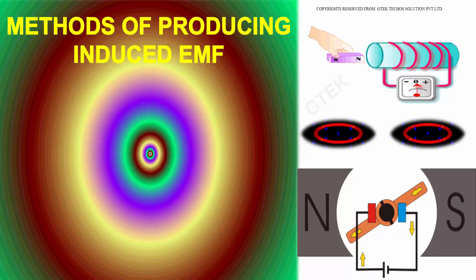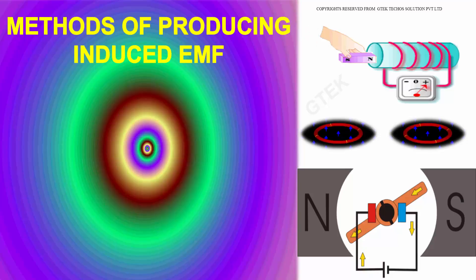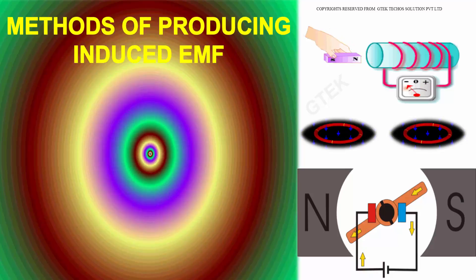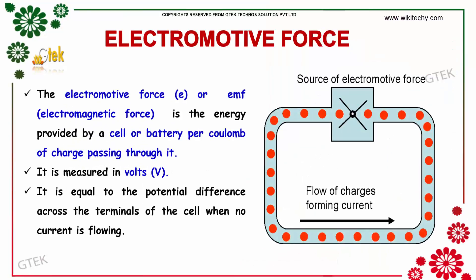Now let's talk about the methods of producing induced EMF. The electromotive force is the energy produced by a cell or battery per coulomb of charge passing through it. It's measured in volts. It is equal to the potential difference between the terminals of the cell when no current is flowing.